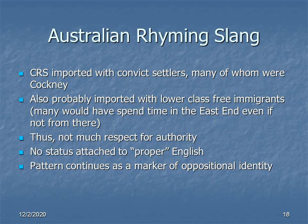That is, very often criminals and the working poor. What they brought with them was a general disrespect for authority and a culture in which proper English doesn't have a whole lot of status. And down to this day, there is a sort of oppositional identity that is deeply rooted in Australian cultural consciousness. A wonderful example of that is probably the most popular Australian folk song ever, Waltzing Matilda, which dates back to about 1895.